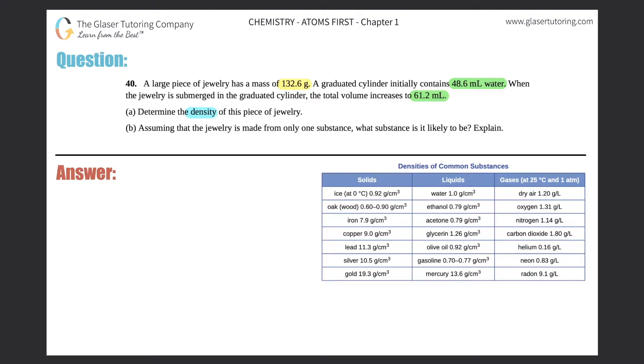Okay, so if I scan this question, I see that they tell me that I have a mass. Now they give me two volumes—I have to recognize that milliliter is a unit for volume, and they're asking for density.